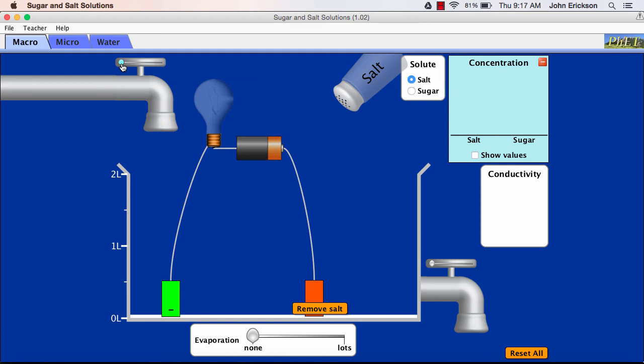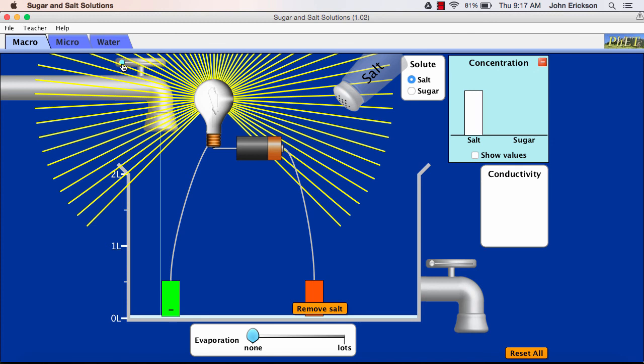And a white substance is left behind. And if I slowly add water, notice what happens then. Suddenly, the light goes back on, and brightly. This is quite interesting.